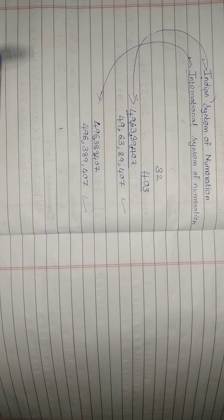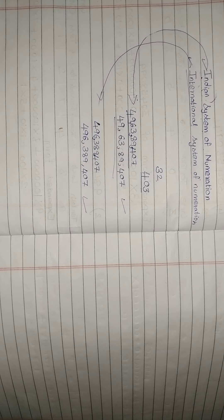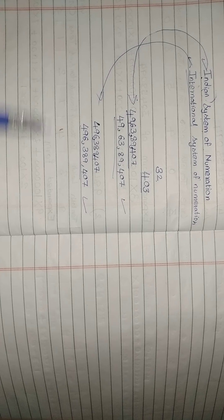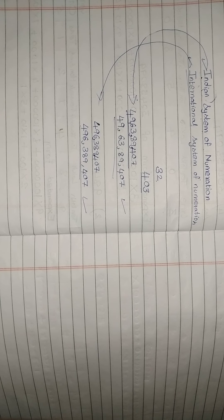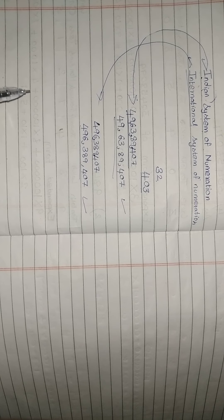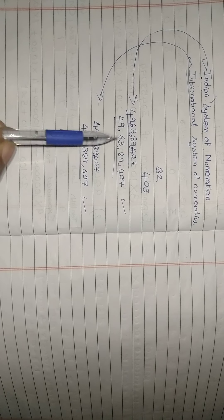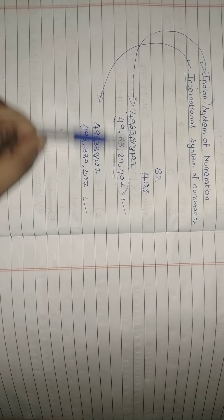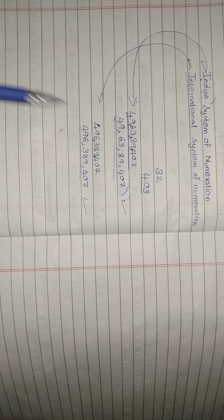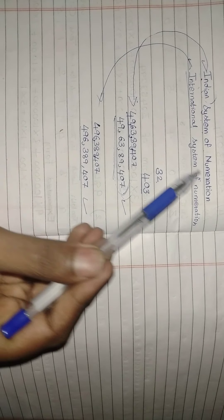There is a lot of difference between the Indian system and the International system of numeration. The International system is how people in foreign countries read numbers and place commas. We, the Indians, place commas differently. So you have to learn both systems.